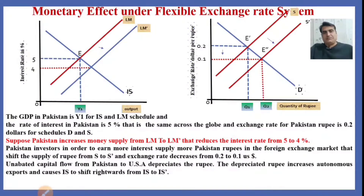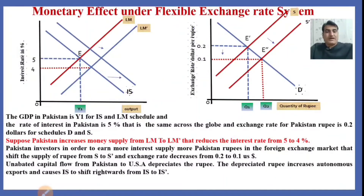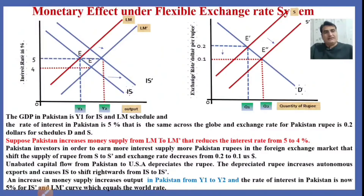This means the continuous capital flow from Pakistan to the USA depreciates the rupee. The depreciated rupee increases autonomous exports and causes IS to shift rightward from IS to IS dash. The increase in money supply increases output in Pakistan from Y1 to Y2, and the rate of interest in Pakistan is now back at 5% for the IS dash and LM dash curves, which equals the world rate.